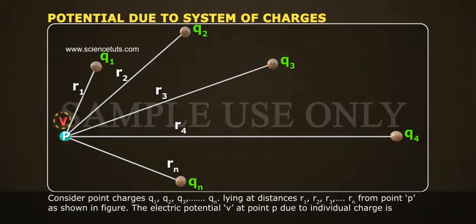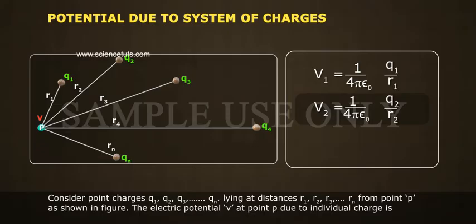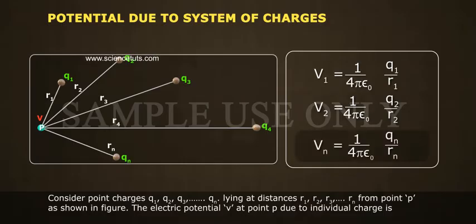The electric potential V at point P due to individual charge is: V1 is equal to 1 by 4 pi epsilon naught q1 by r1, V2 is equal to 1 by 4 pi epsilon naught q2 by r2, and Vn is equal to 1 by 4 pi epsilon naught qn by rn.